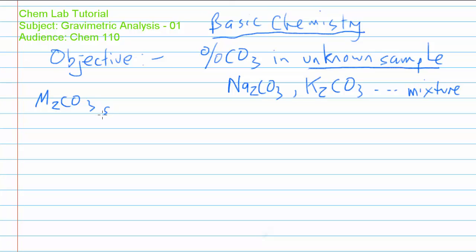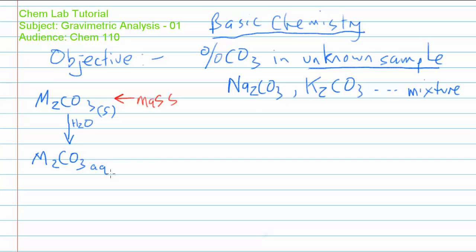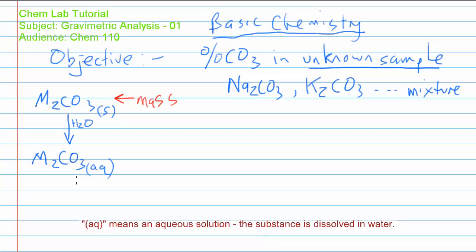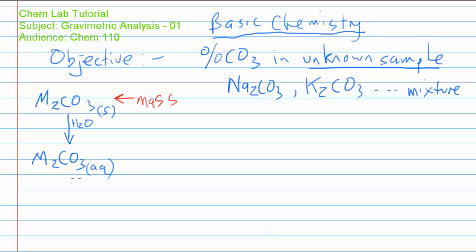You're going to start with a solid sample of that — M₂CO₃(s). The very first thing you're going to do in this experiment is determine the mass of the sample that you are analyzing. You're going to be instructed to weigh out, on the analytical balance, a precisely known mass of the unknown. Once you've weighed out the sample, one of the next things you're going to do is dissolve the sample in water to produce an aqueous solution of your carbonate. You must ensure that all of the solid is dissolved in the water.